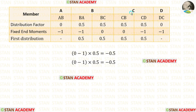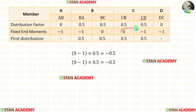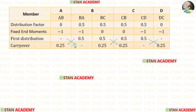Now let us do the distribution at joint C. For CB: we add the two fixed end moments and multiply with the distribution factor at CB — we get a negative value, so we enter it as positive. For CD: we add the values and multiply with the distribution factor at CD — again a negative value, entered as positive. Now for carry over: we divide these values by 2, giving 0.25.